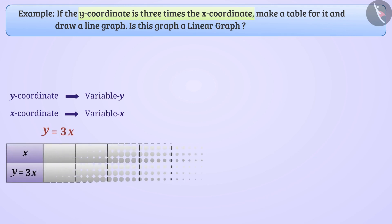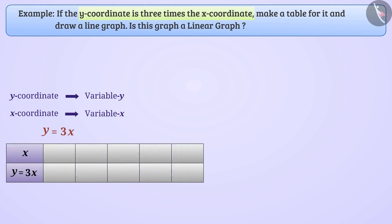Let's make a table from this. If x = 0, then y = 3 × 0 = 0. If x = 1, then y = 3 × 1 = 3. If x = 2, then y = 3 × 2 = 6. Similarly, we will find the value of y for different values of x. Now, we will draw a graph using this table.